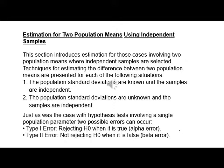Just as was the case with hypothesis tests involving a single population parameter, two possible errors can occur. Type I error: rejecting H0 when it is true — also called alpha error. Type II error: not rejecting H0 when it is false — also called beta error.